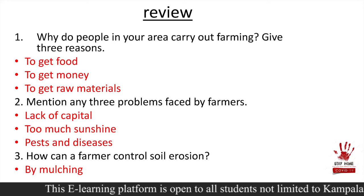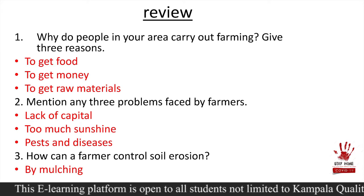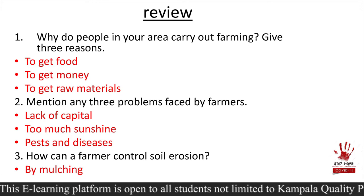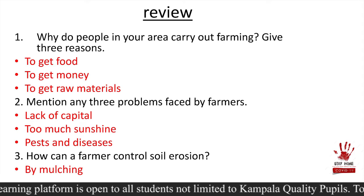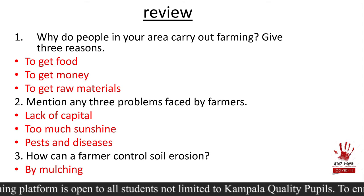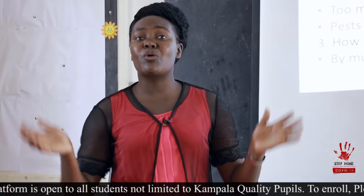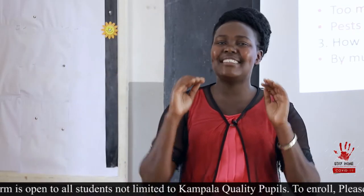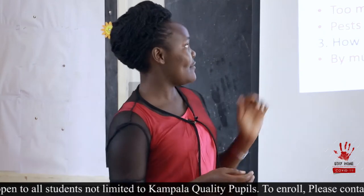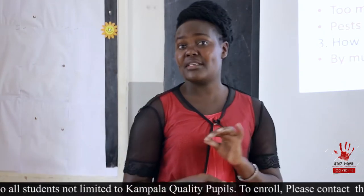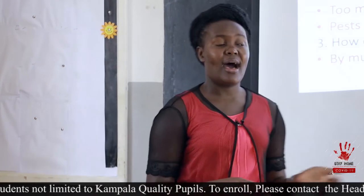Next question: mention any three problems faced by farmers. You must have identified several problems. The first one is lack of capital. Too much sunshine, pests, and diseases. They may not be exactly these because we listed many problems. If you don't have these ones, you must have the same or related answers.